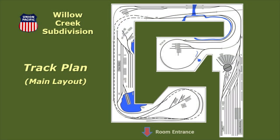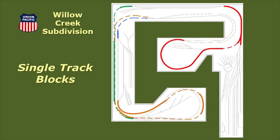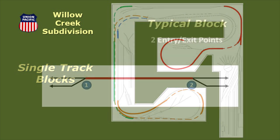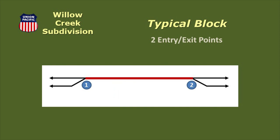The Willow Creek Track Plan includes four sections of single track positioned between sections of double track or sections with passing sidings. To avoid trains running into each other, each section of single track is protected by an automated block signaling system. Three of the single track sections are typical blocks with an entry-exit point on each end of the block.